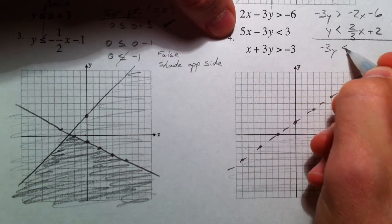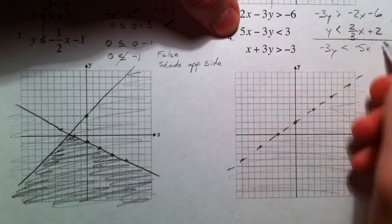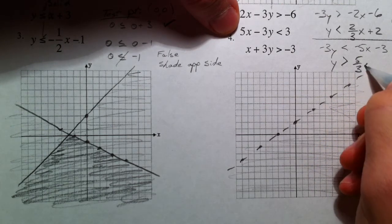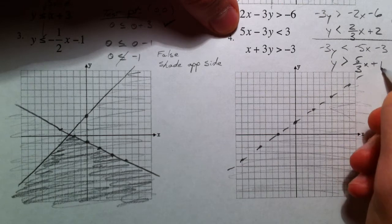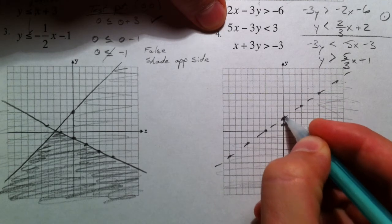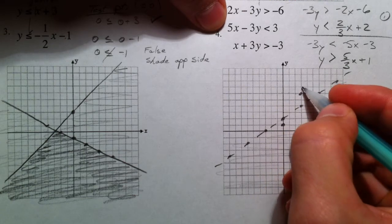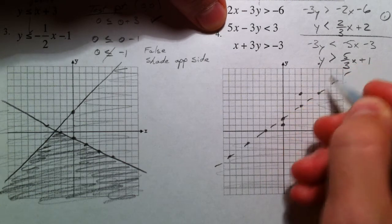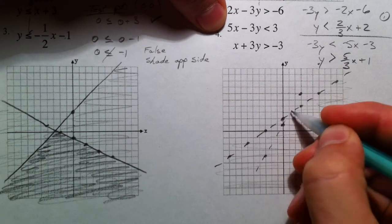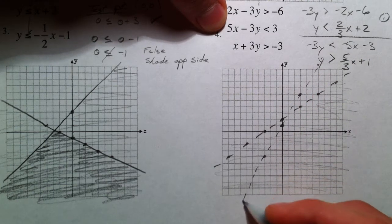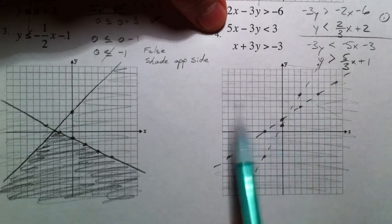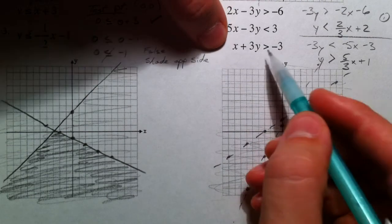Negative 3y is less than negative 5x minus 3. And again, flip the sign. Positive 5 thirds x. 3 divided by 3 is a positive 1 because a negative is divided by a negative. So, up 1, 2, 3, 4, 5, and over 1, 2, 3. Just counting the slope. And this one is y is greater than. And so I'm shading this direction. So, so far, we're right here.